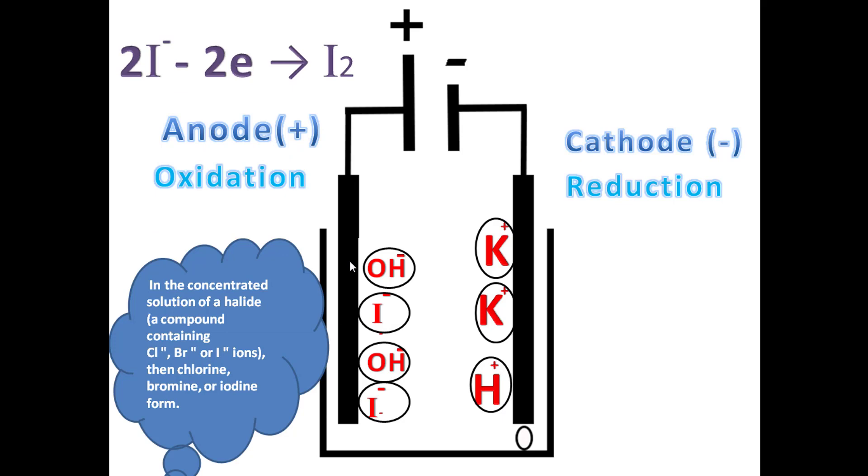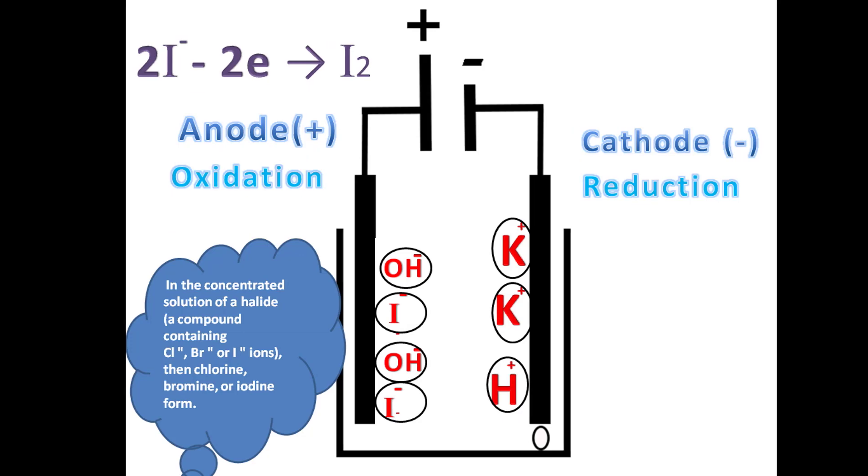Let's see the oxidation half equation. According to the definition of oxidation process, which means losing of electrons, 2I- will lose two electrons forming I2. We know I2 has a brown color when it's in the solution.